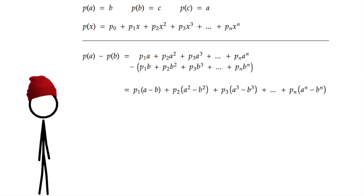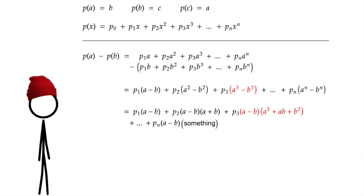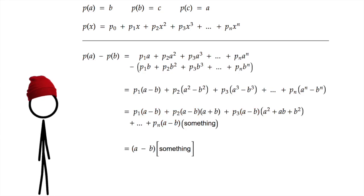Look, p1 times a minus b plus p2 times a squared minus b squared plus p3 times a cubed minus b cubed plus all the way up to pn times a to the n minus b to the n. All these terms can be factored with an a minus b term. So let's do that. So a minus b is a minus b. But then a squared minus b squared is a minus b times a plus b. And a cubed minus b cubed is a minus b times a squared plus ab plus b squared. Who cares? The rest of it doesn't matter. All that matters is these a minus b's. Because we know every single term here has an a minus b factor. And that means the whole thing is one big multiple of a minus b.